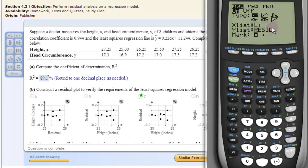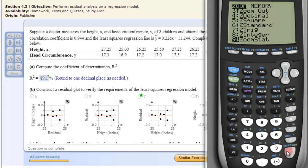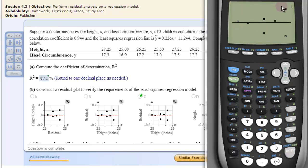And we want residual here. Now we don't type that in. It's actually a name. And where we find it is under second, stat, and number 7. There it is, residual. So we click that and then enter. Then we can go to zoom 9. That would be the zoom stat. And then there's our residual plot.